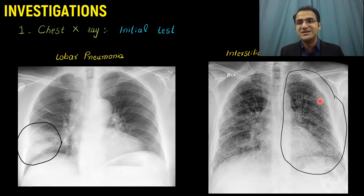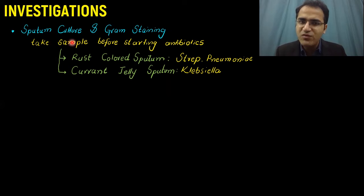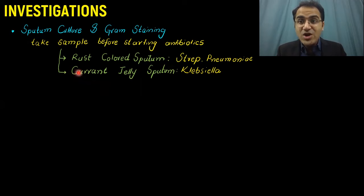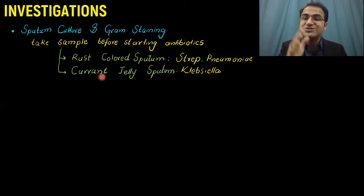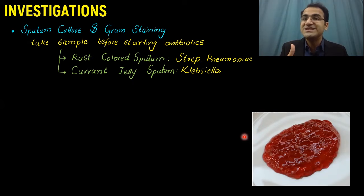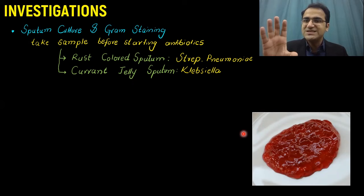Sputum culture and gram staining are very helpful for diagnosing the organism and type of pneumonia. Remember, you must take the sputum sample before starting antibiotics — if antibiotics have already been started, cultures will not grow. The color of sputum can also help: rust-colored sputum is most likely caused by Strep pneumoniae, while currant jelly-colored sputum is caused by Klebsiella. Klebsiella mainly infects hospitalized patients who develop aspiration, such as alcoholic patients who develop aspiration pneumonia.